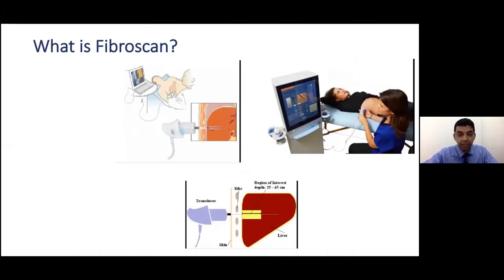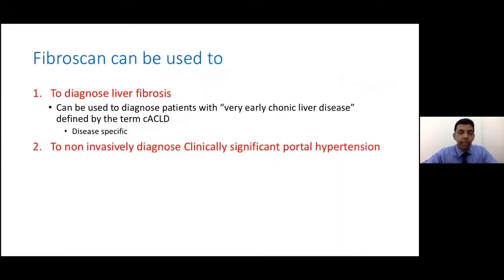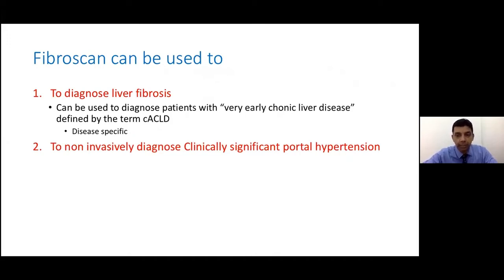With FibroScan we get a simple reading. A normal liver reads 3.5 because it is not stiff, whereas a cirrhotic liver reads 33.3, which is stiff. FibroScan is used for two things: first to detect liver fibrosis, and now we are using it as a non-invasive marker to detect clinically significant portal hypertension.